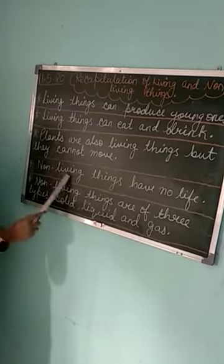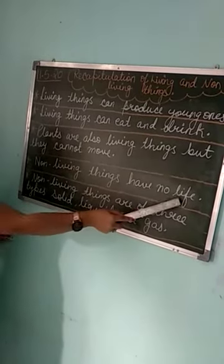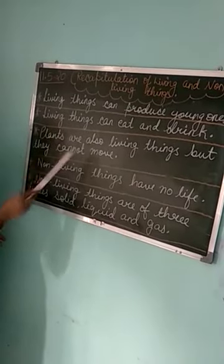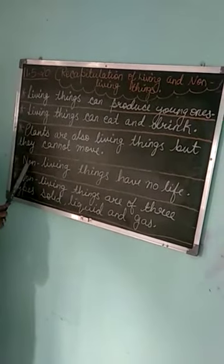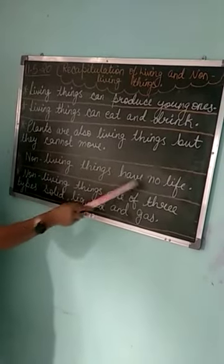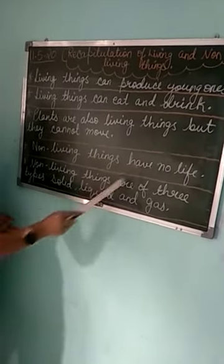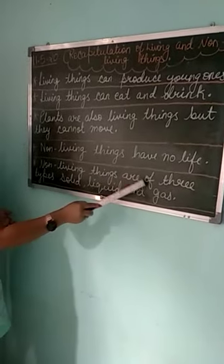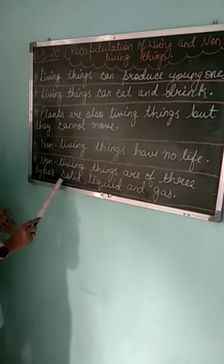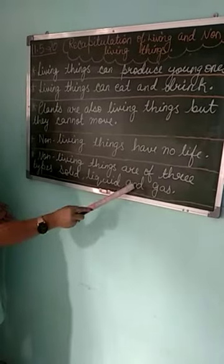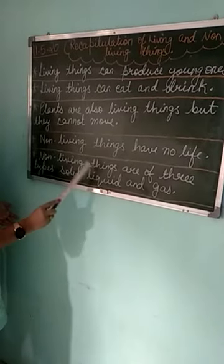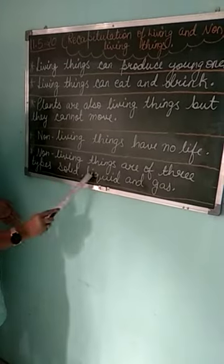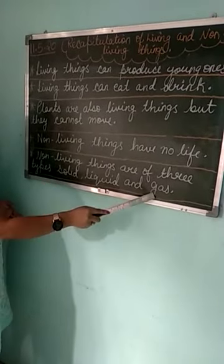Next: non-living things have no life. Now this part is about non-living things. Non-living things की life नहीं होती है. Non-living things are of three types — solid, liquid, and gas. Non-living things तीन types के होते हैं: one is solid, one is liquid, and the other one is gas.